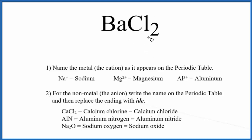Specifically, this is called a binary ionic compound. We have two different elements, the barium and the chlorine. So for binary ionic compounds, we use these rules to write the name.